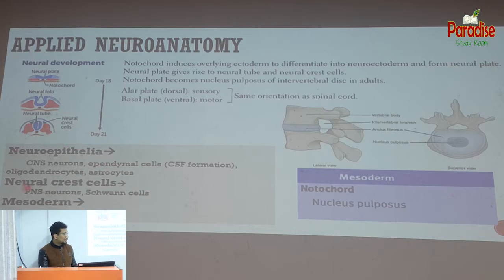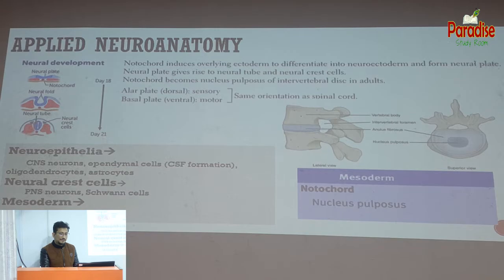An important exam question: basic neuroepithelial development gives rise to CNS neurons, CSF formation, oligodendrocytes — the supporting cells of the CNS — and astrocytes. Neural crest cells are the small portions that go off from the neural tube; they give rise to PNS neurons, Schwann cells, and microglial structures.